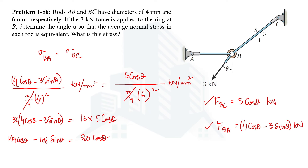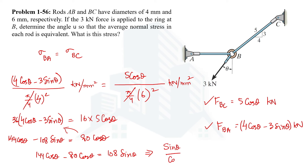Keeping cos theta on one side and sin theta on the other: 144 cos theta minus 80 cos theta equals 108 sin theta. Simplifying further, sin theta over cos theta equals 64 divided by 108, which is tan theta. Taking the inverse tangent of this expression gives theta equal to 30.65 degrees. This is the answer.